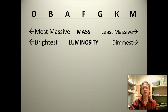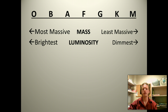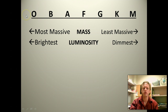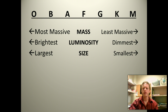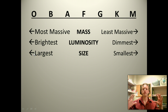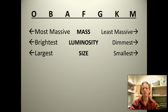Luminosity is just a big word for how much total light the star gives off — the brightness essentially, not necessarily how bright it looks to us, but the total amount of brightness the entire star is giving off. It turns out the most massive stars are also the most luminous. The O and B-type stars give off the most light. And as for size — if you have a very massive star, the most massive stars are also the very largest.